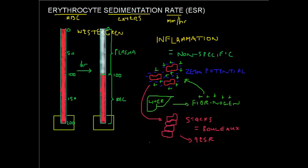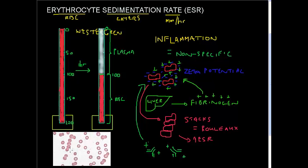Like fibrinogen, other molecules can do the same thing. For example, in response to infection the body produces antibodies — with their two heavy chains and two light chains. Antibodies are also positively charged and can neutralize the charge between red blood cells, causing rouleaux formation and eventually a high ESR. On a peripheral blood smear you can see these little stacks of red blood cells, which are often indicative of an underlying inflammatory or infectious process.